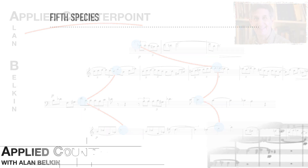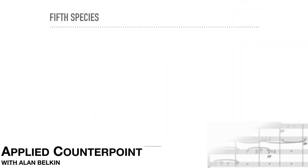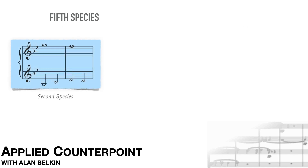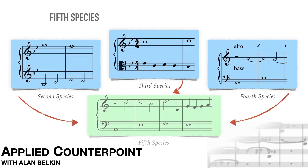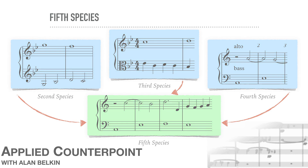Fifth species is the goal, the reason all the others exist. We will finally combine what we learned in second, third, and fourth species to write lines that begin to resemble real-life musical situations. Now we can vary the rhythm so that, in addition to the shape of the line and the dissonances, it can also contribute to the musical character.